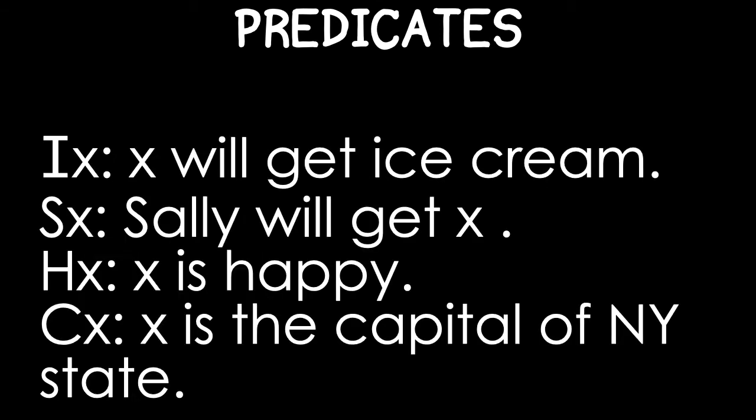In QL, we use capital letters to symbolize predicates. When we write a symbolization key, we also use variables X, Y, or Z instead of blanks. Importantly, X is not a thing. It's a variable or placeholder. It tells you how many lowercase letters you need after the predicate in order to express a complete thought.